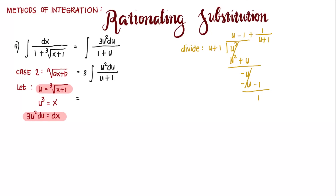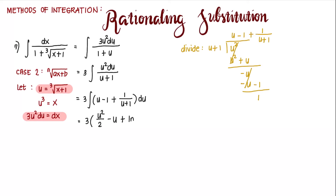We rewrite our integrand. That's 3 times the integral of the quantity (u minus 1 plus 1 over u plus 1) du. Integrating, that's 3 times the quantity of u squared over 2 minus u plus ln of u plus 1, plus C. We distribute the constant to get 3 halves.